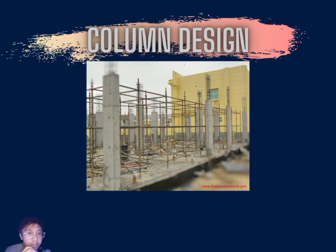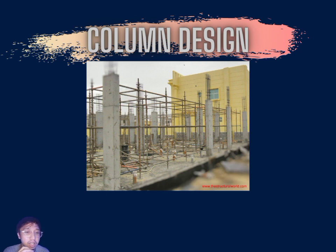What is a column? Columns are vertical or inclined compression members used for transferring superstructure load to the foundation. The structural design of reinforced concrete columns involves the provision of adequate compression, reinforcement, and member size to guarantee the stability of the structure. In typical cases, columns are usually rectangular, square, or circular in shape. Other sections such as elliptical, octagonal, and others are also possible.